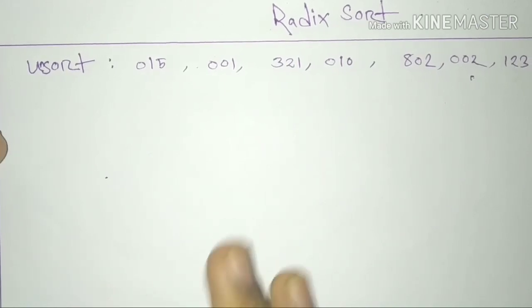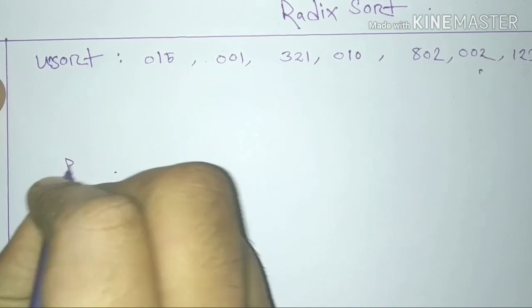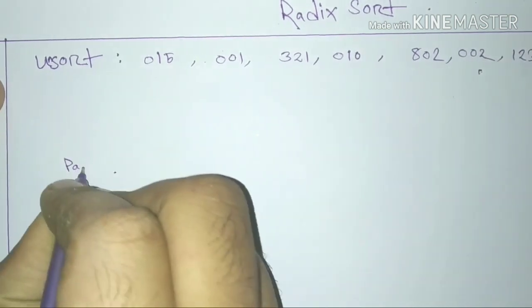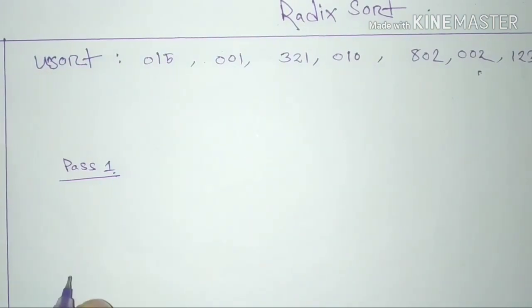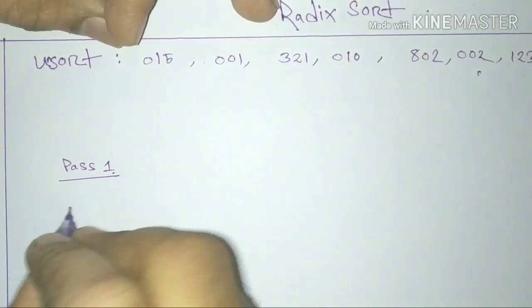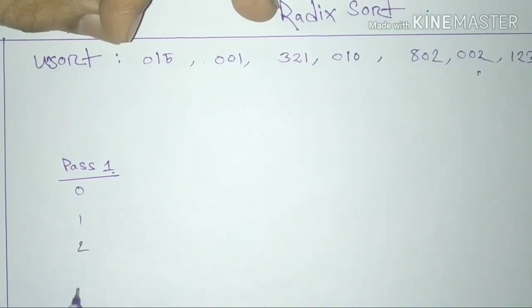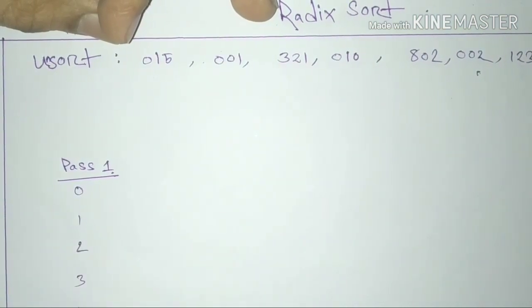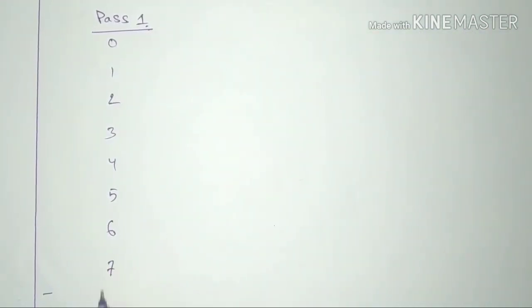So what do we do in the first step? The first step is Pass 1. In Pass 1, we use buckets 0 to 9: 0, 1, 2, 3, 4, 5, 6, 7, 8, 9.